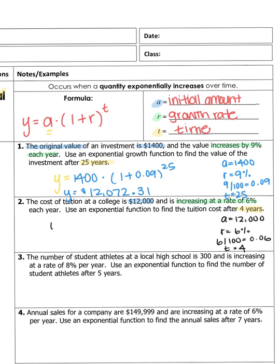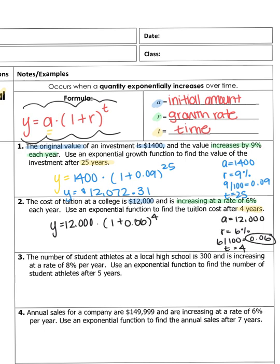Now we plug everything into the formula: y equals $12,000 times 1 plus — it's always 1 plus for exponential growth — 0.06, all raised to the fourth power. In the calculator, type 12000 times parenthesis 1 plus 0.06 caret 4. You should get $15,149.72. Since we're talking money, we round to two decimal places.